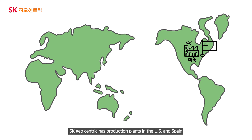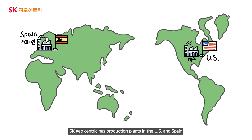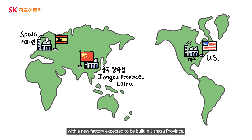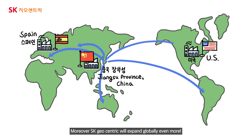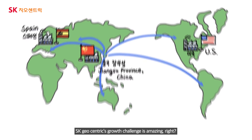SK Geocentric has production plants in the U.S. and Spain, with a new factory expected to be built in Jiangsu Province. Moreover, SK Geocentric will expand globally even more. SK Geocentric's growth challenge is amazing.